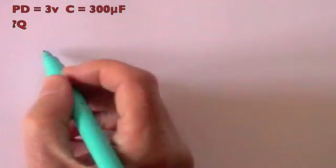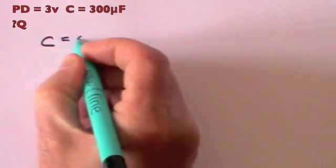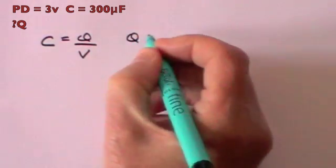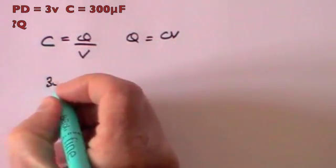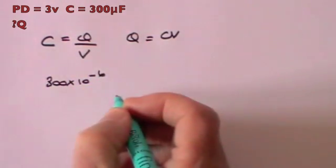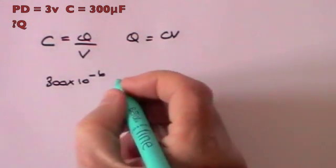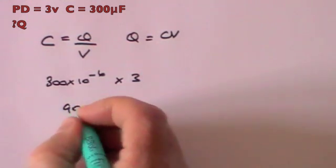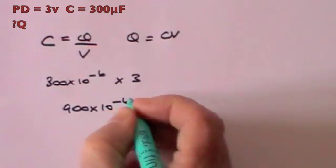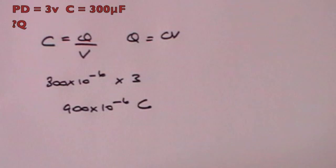Question 2: when a potential difference of 3 volts is placed across a capacitor of 300 microfarads, what charge will it store? We'll need the equation C equals Q over V, which means Q equals CV. The capacitor is 300 times 10 to the minus 6 farads, times the voltage of 3 volts, giving 900 times 10 to the minus 6 coulombs. So the total charge on that capacitor will be 900 times 10 to the minus 6 coulombs.